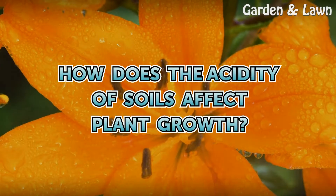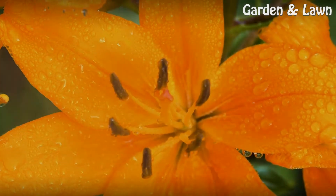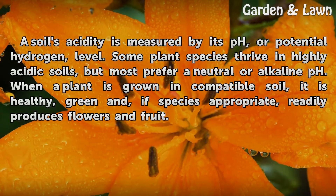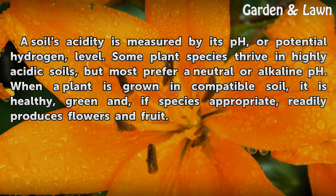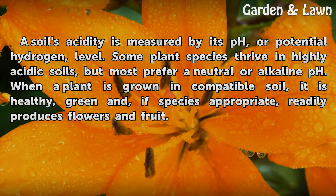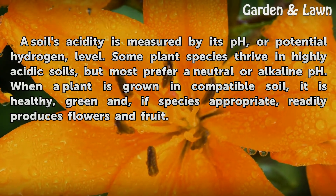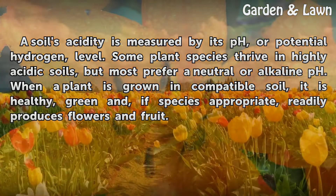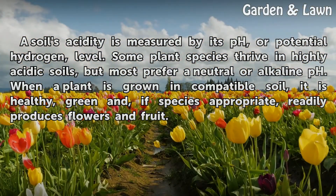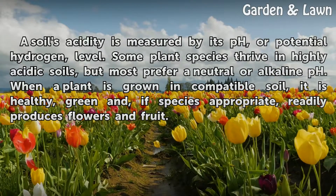How does the acidity of soils affect plant growth? A soil's acidity is measured by its pH level. Some plant species thrive in highly acidic soils, but most prefer a neutral or alkaline pH. When a plant is grown in compatible soil, it is healthy, green and, if species appropriate, readily produces flowers and fruit.